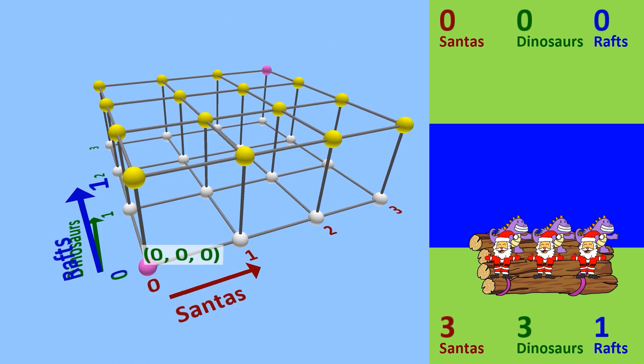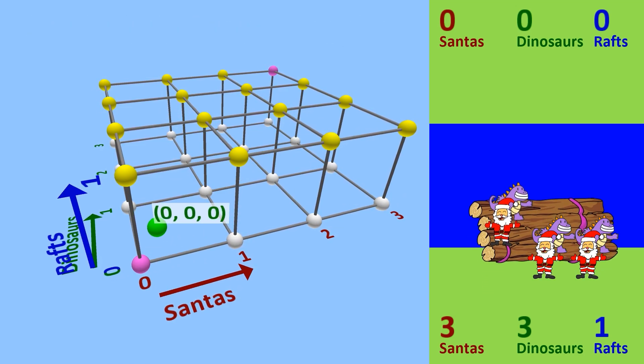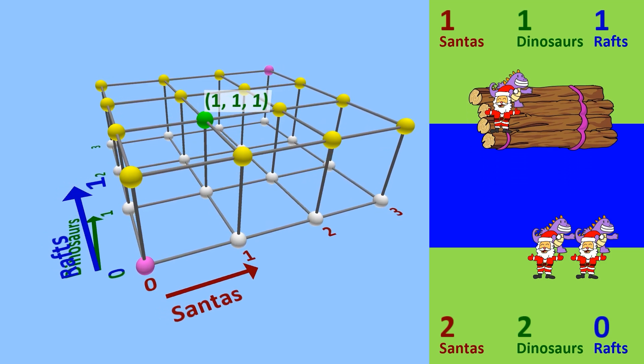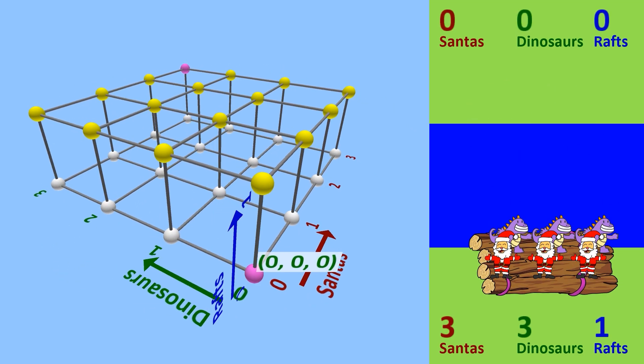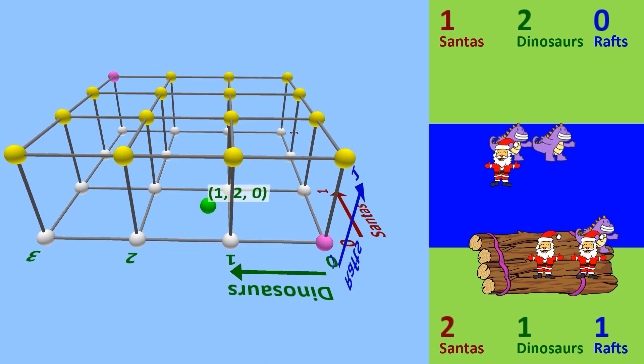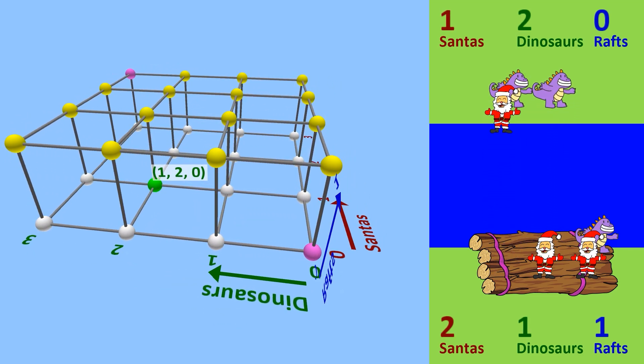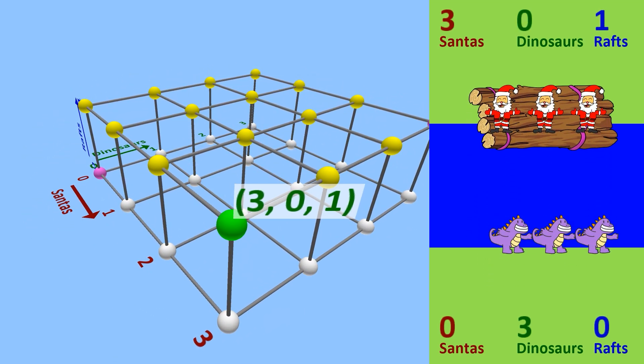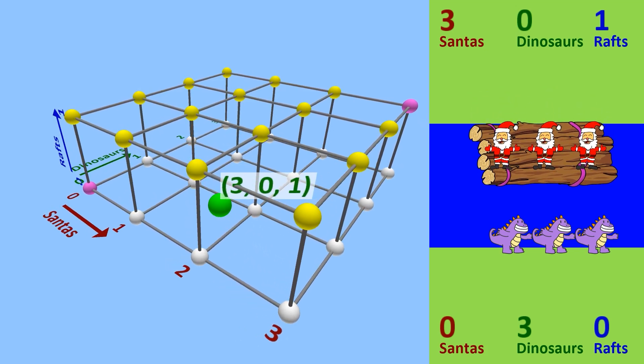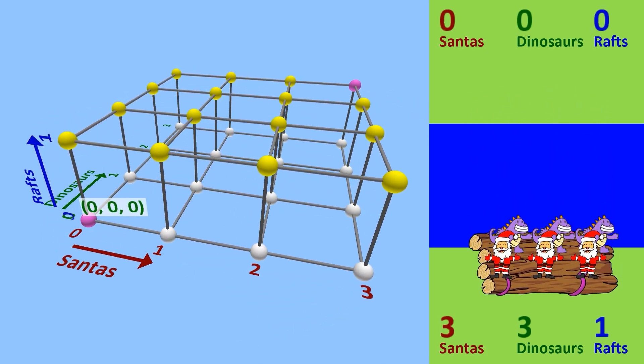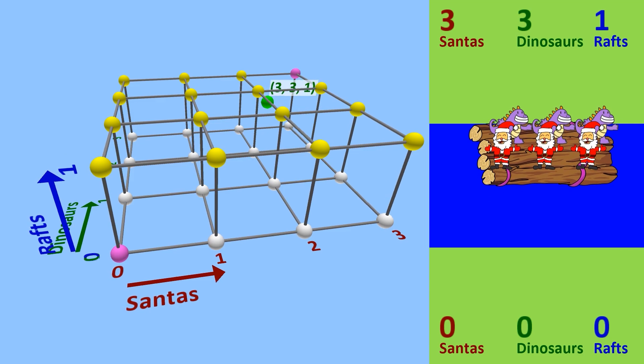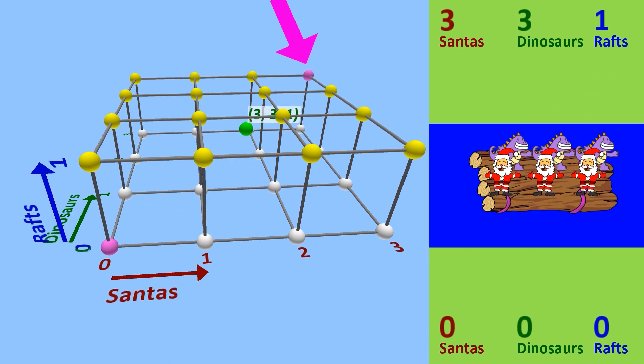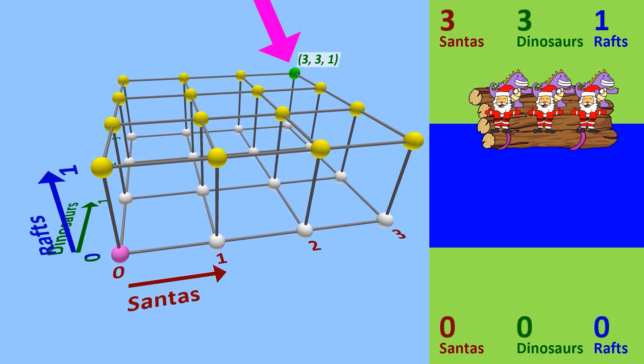So let's look at some examples. If we were to move one Santa, one dinosaur, and one raft to the finish line at the same time, that corresponds with the vector (1, 1, 1). And if we teleport one Santa, two dinosaurs, and no rafts, that corresponds with the vector (1, 2, 0). Moving all three Santas to the end with the raft corresponds with the vector (3, 0, 1). And finally, our winning destination is when everybody makes it to the finish line, which corresponds with the vector (3, 3, 1). If we can just get from the pink point at the origin to the pink point at the opposite diagonal, 3, 3, 1, we win the puzzle!